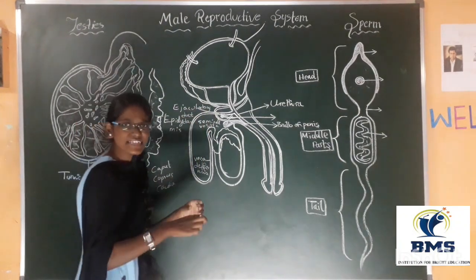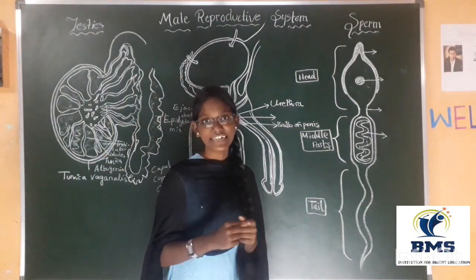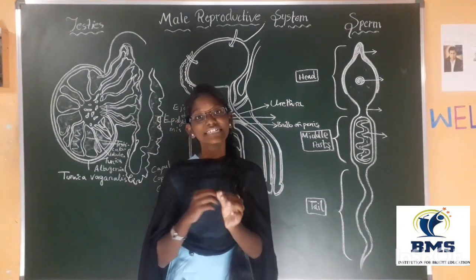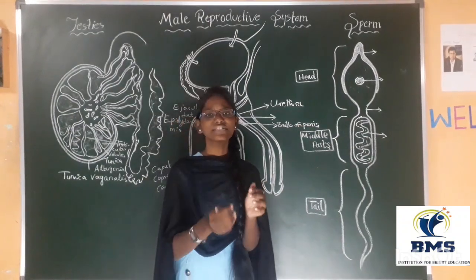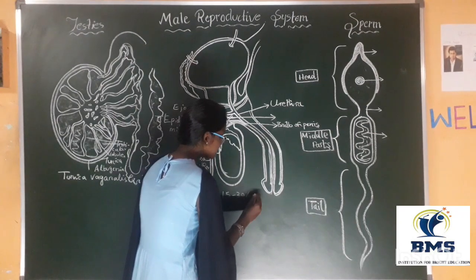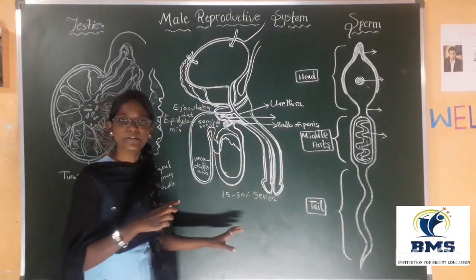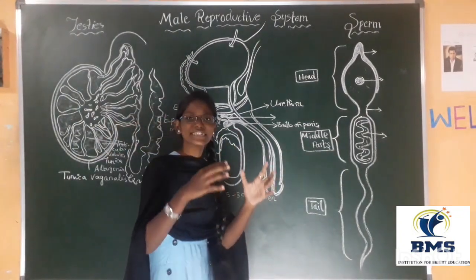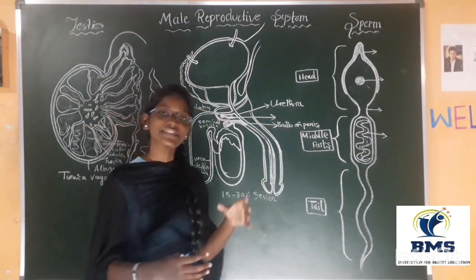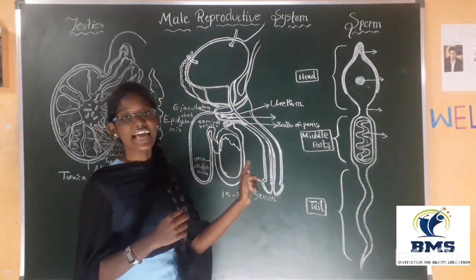After the ejaculatory duct, when it moves forward, it will reach the prostate gland. This prostate gland will also provide some of the semen necessary for this sperm — nearly 15 to 30 percent. The semen from the prostate is acidic in nature; it will activate the spermatozoa and also give nutrition to the sperm.